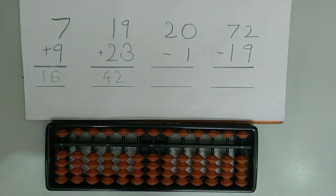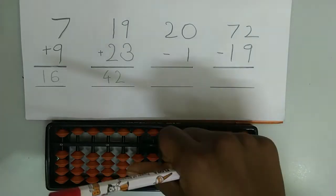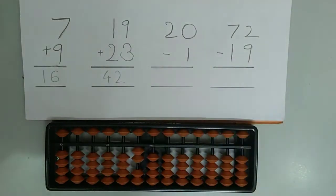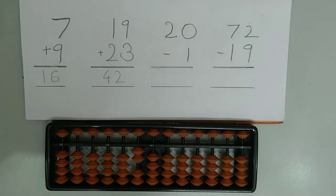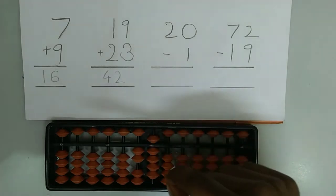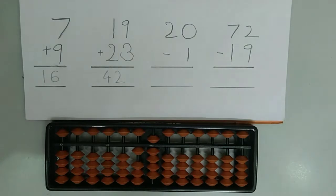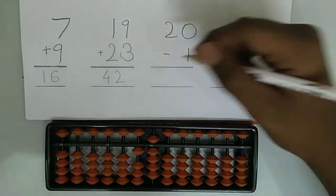Now let's try big friend subtractions. The formula for subtraction is plus friend minus boss. First let's try 20 minus 1. First we have to represent 20 on the abacus. The friend of 1 is 9, so we add 9 because the formula for subtraction is plus friend, and subtract 10 because 10 is the boss. So 20 minus 1 is 19.